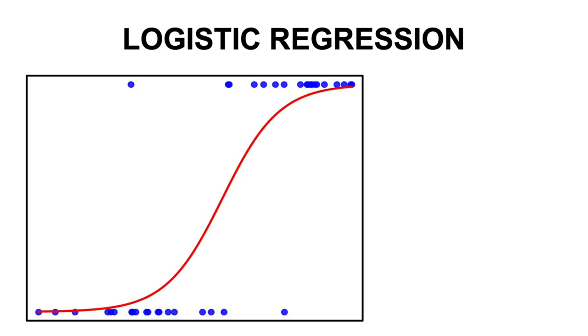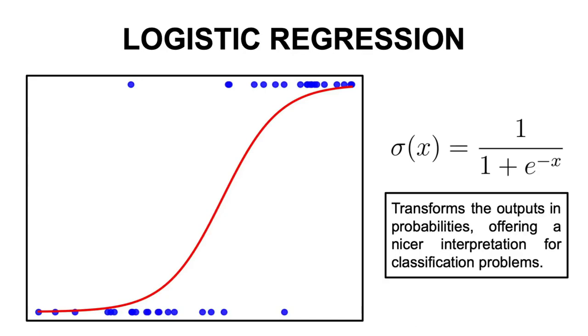When I got to study the next model, the logistic regression model, things changed a little bit. First of all, we use the sigmoid function on top of our predictions, which makes sense at the intuitive level, since this transforms the output into a Bernoulli probability distribution, thus limiting the range of values our predictions can take and offering a much nicer interpretation for classification problems.